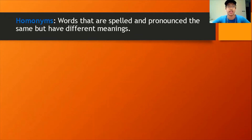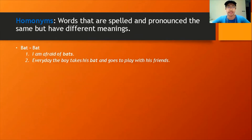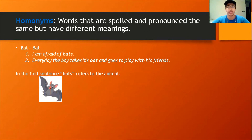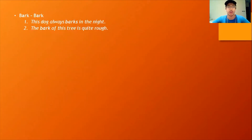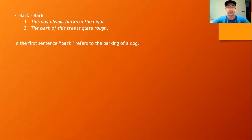Here are some examples. 'I'm afraid of bats.' 'Every day the boy takes his bat and goes to play with his friends.' So in the first sentence, 'bat' refers to the animal, whereas in the second sentence, 'bat' refers to a cricket bat. Let's take a look at another example. 'The dog always barks in the night.' 'The bark of this tree is quite rough.'